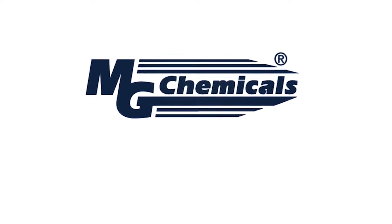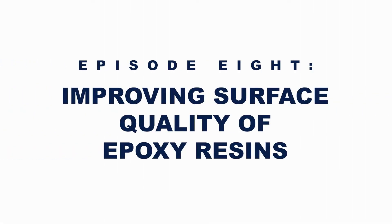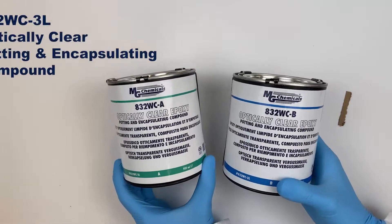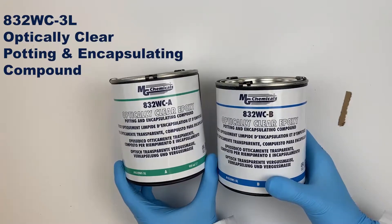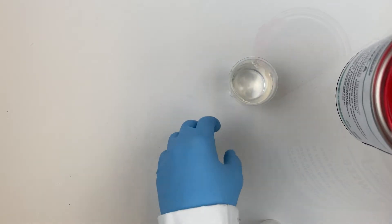Welcome to MG Chemicals Tech Talk Episode 8, Improving Surface Quality of Epoxy Resin. In this video we will be using our 832WC which is a two-part optically clear epoxy resin.